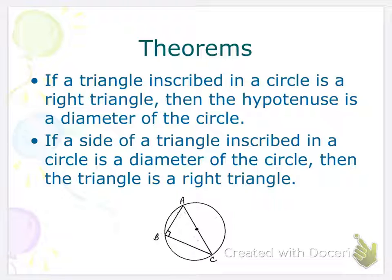Here we have two more theorems. So if a triangle inscribed in a circle is a right triangle, then the hypotenuse has to be the diameter of the circle. And then you kind of have the converse next. So if a side of a triangle inscribed in a circle is the diameter of the circle, then the triangle has to be a right triangle. So if one of the sides is that diameter, remember the diameter is the one that goes straight through that center, then it has to be a right triangle.